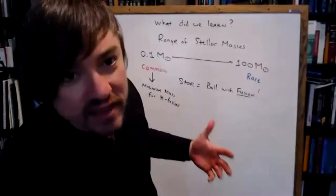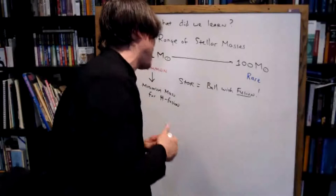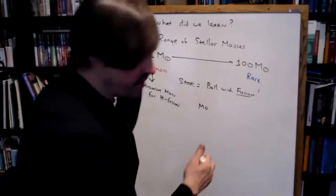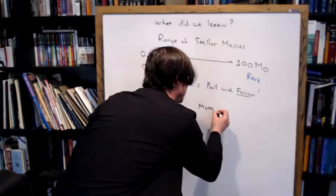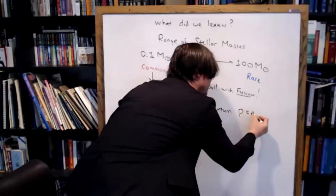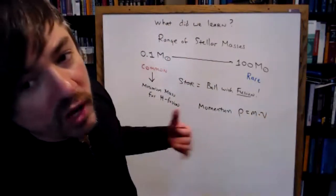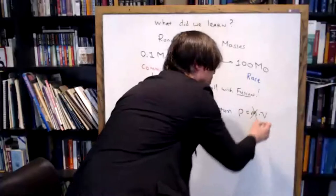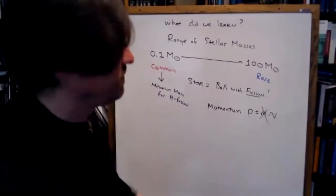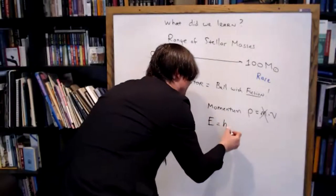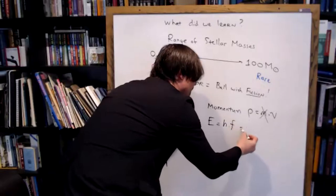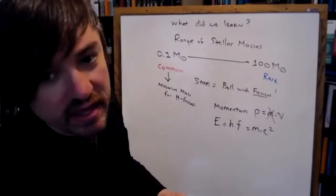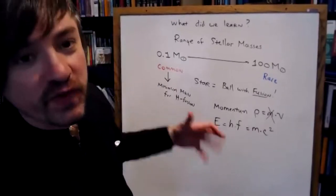Technically, photons are electromagnetic and should not have mass. In order to impart force to another object, something needs momentum — defined as mass times velocity. One would think that a photon with no mass would have no momentum. But photons do have energy, and through E equals mc squared, photons do have a certain radiation pressure.